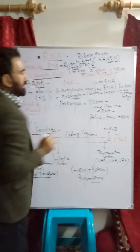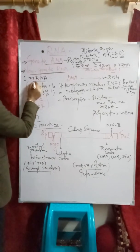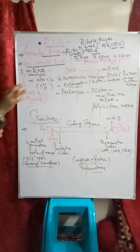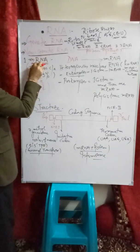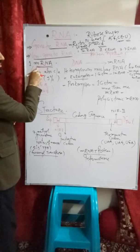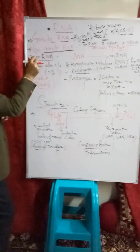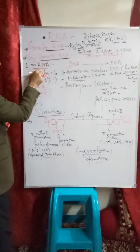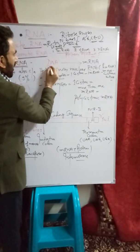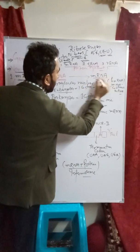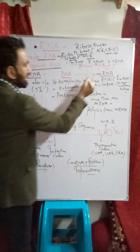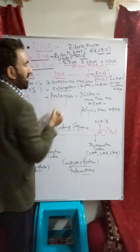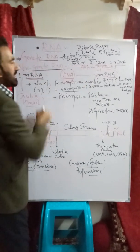Now we are going to discuss about messenger RNA. The RNA that receives information from the sense strand of DNA is called messenger RNA. It is also known as informational RNA because it receives information from DNA for the synthesis of proteins.